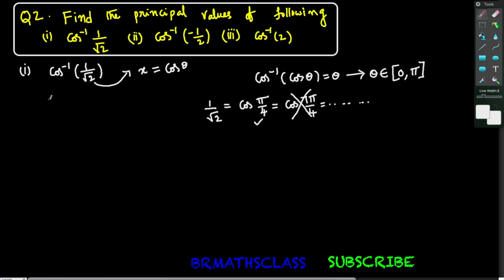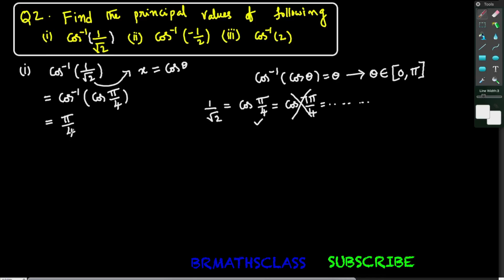Coming back to the question: cos inverse of 1 by root 2. We write 1 by root 2 as cos pi by 4. This is of the form cos inverse of cos theta, and this theta pi by 4 is in the closed interval 0 to pi. So cos inverse of cos pi by 4 is pi by 4. Therefore, the principal value of cos inverse of 1 by root 2 is pi by 4.